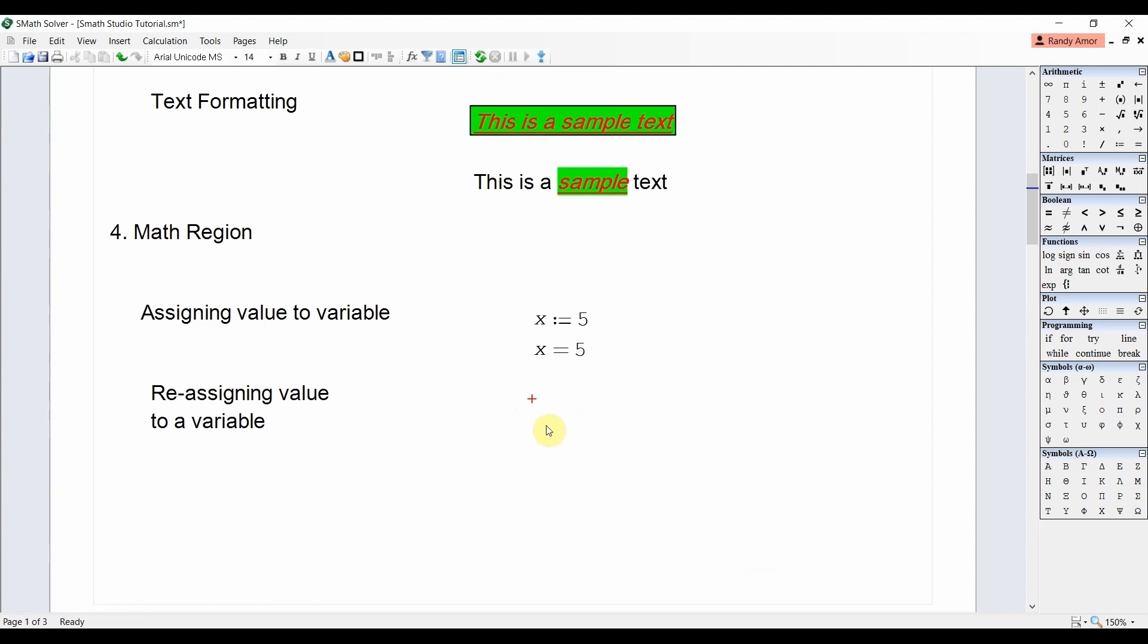You may also assign a new value to a variable by using the colon key instead of the equals key. Smath Studio will automatically change the colon with equals sign and assign the new value you give to the variable. In the above example where we initially assigned 5 to x, if we type x colon 10 then press Enter, typing x equals will give us the new value of x, which is now 10 instead of 5.